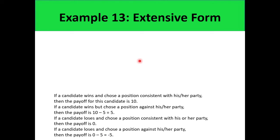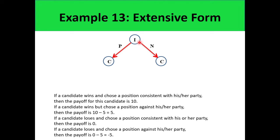For our extensive form, it is the incumbent who will decide first. The incumbent can choose to either go with the party or to go against the party — we'll use P for go with the party and N for go against the party. After making the decision, it is the challenger who will make the decision. If the challenger chooses to go with the party, then the incumbent wins because they have the same positions. So the payoff of winning is 10 and losing is 0, with no deduction or penalty since they went with the party.